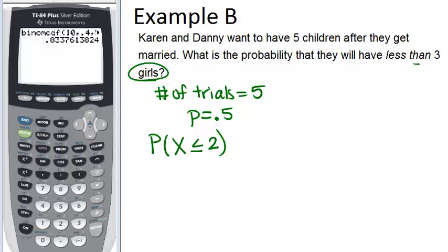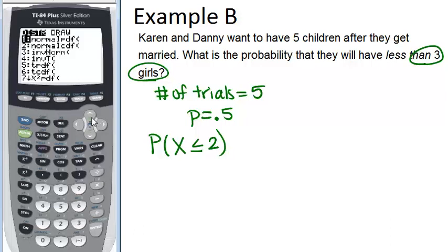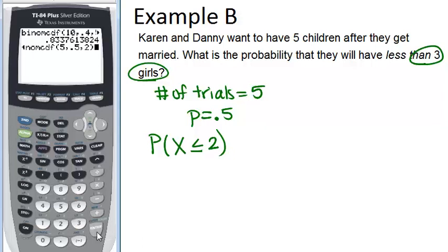That can be a little tricky because in the problem it said 3 but we don't want to include 3 in our probability. So we have to go down to the number before that which is 2. Now we can go into our calculator to figure this out. Once you're in your binom CDF menu you can type in what we know, which is that there are 5 trials, the probability of a girl in each case is 0.5, and we want to know the probability that they have at most 2 girls. So we type in 2 and click enter.